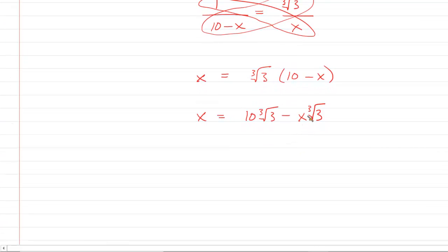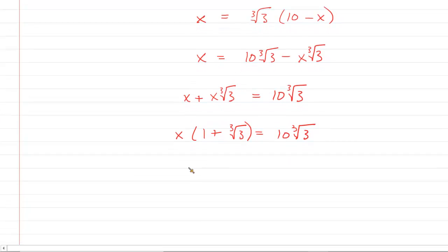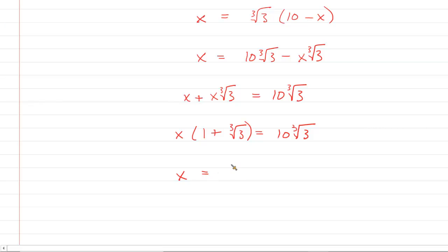We'll add the X cube root of 3 to the other side. So you'd have X plus X cube root of 3. This would equal 10 cube root of 3. We'll factor an X from the left side. That gives us 1 plus cube root of 3. We are very close here because now we can just divide both sides of the equation by 1 plus cube root of 3. So our final X is going to be 10 cube root of 3 all divided by 1 plus cube root of 3. So this is going to turn out to be the correct answer for X.